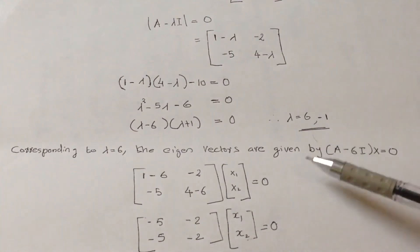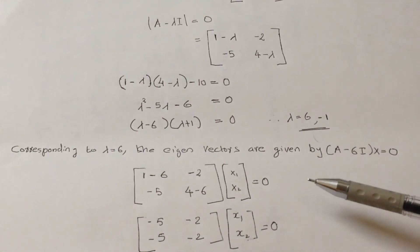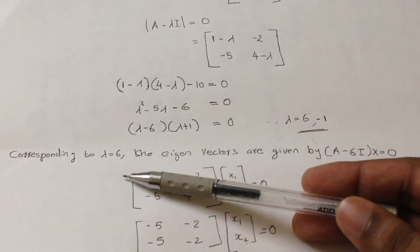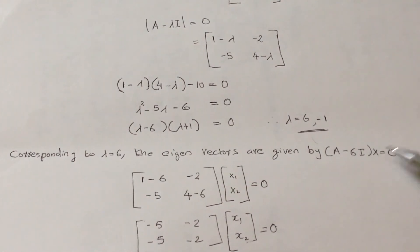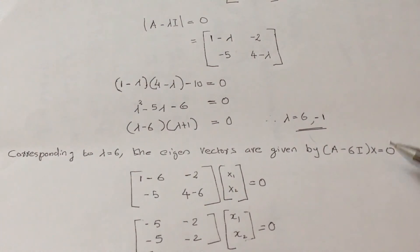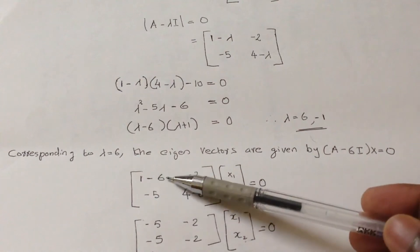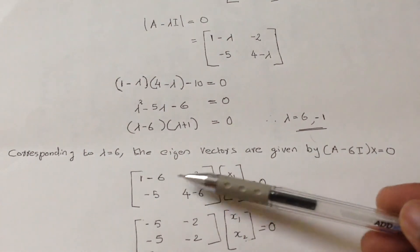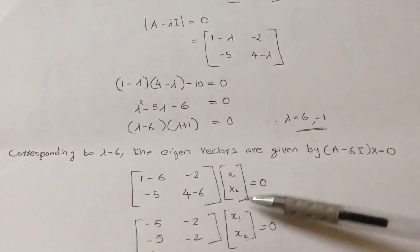For finding the eigenvectors, we apply each lambda value to the equation A minus lambda I times x equals 0. Taking lambda equals 6 first: substituting into the matrix gives us 1 minus 6, minus 2, minus 5, and 4 minus 6, multiplied by x1, x2 equals 0.